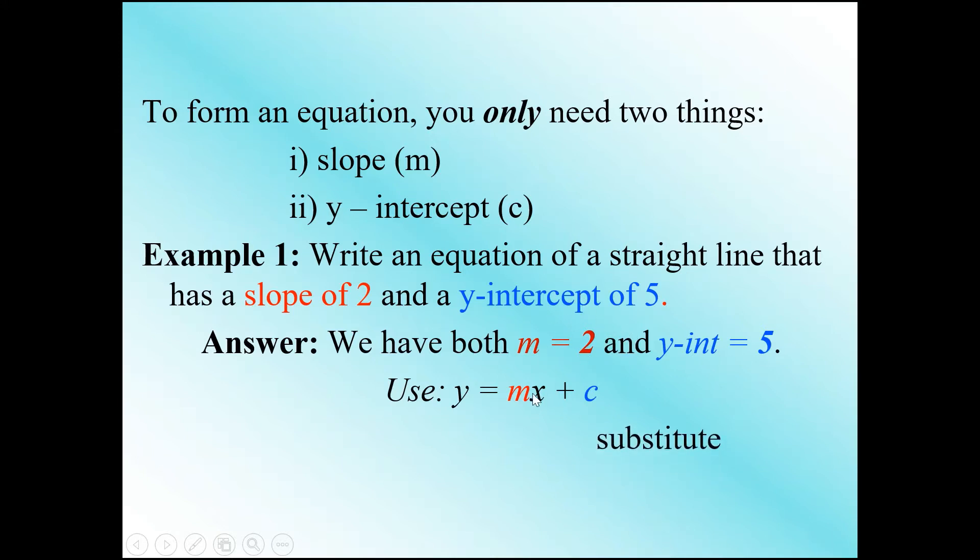We'll substitute the values that are given. Make sure the coefficient of x is the slope value which is m, and the y-intercept is the c value. So m is 2 and the c value is 5. The final equation is y equals 2x plus 5.